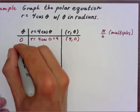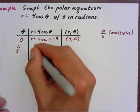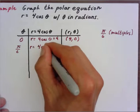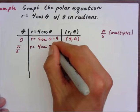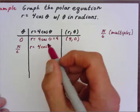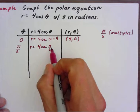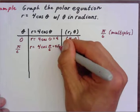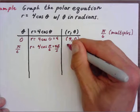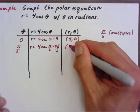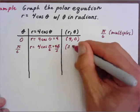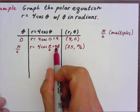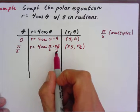The second point is at pi over six. r equals four times cosine of pi over six. The cosine of pi over six is root three over two, so it's four times root three over two, which simplifies to two root three, approximately 3.5. So the point is (3.5, π/6).